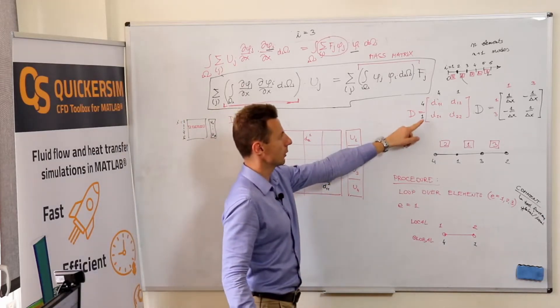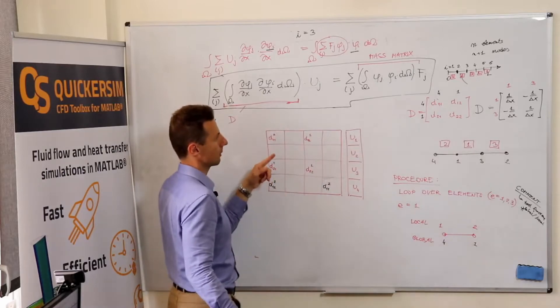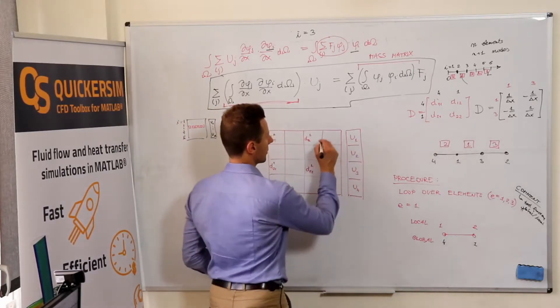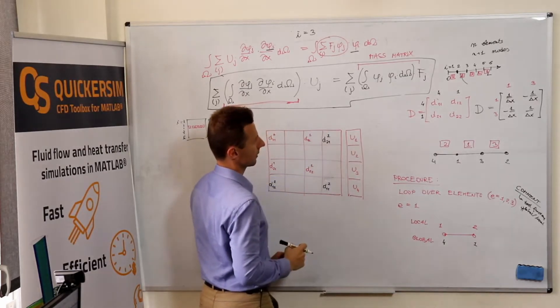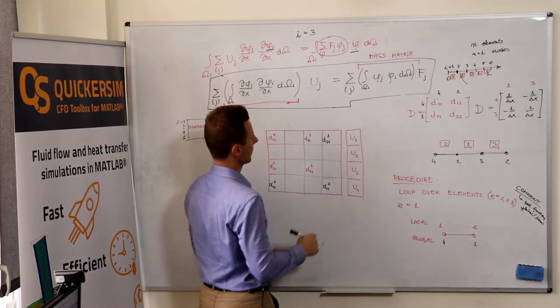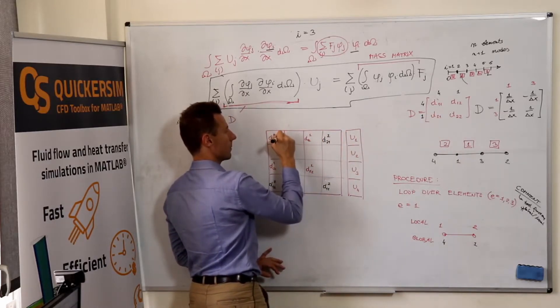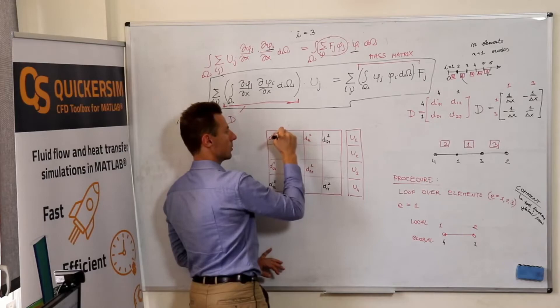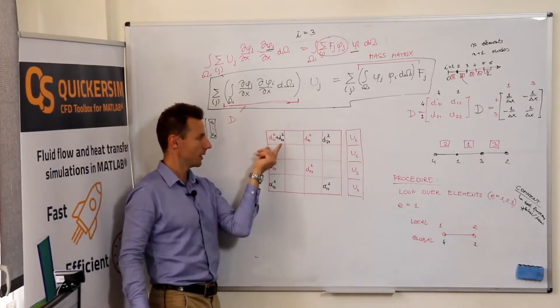Okay, we are continuing. We need to plug this into the first global row. So here D two-one of the second element, and plus D two-two of the second element. Right now, an important comment.